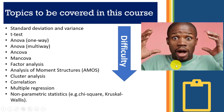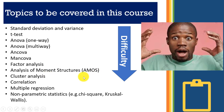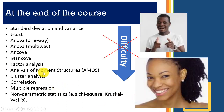Some of you are alarmed — people who dislike maths and statistics already alarmed that we're going to be learning standard deviation, variance, t-test, Analysis of Variance (ANOVA) — one-way and multi-way — Analysis of Covariance (ANCOVA), Multivariate Analysis of Covariance (MANCOVA), factor analysis, Analysis of Moment Structures (AMOS), cluster analysis, correlation, multiple regression, and non-parametric statistics including Chi-square and Kruskal-Wallis ANOVA.